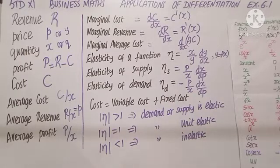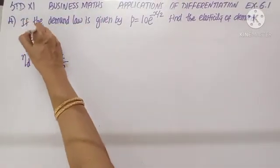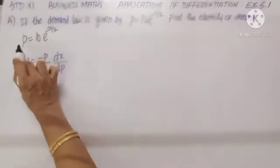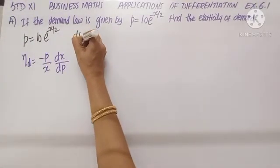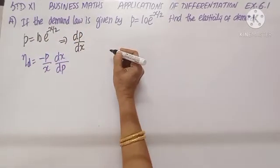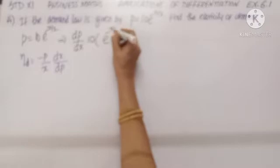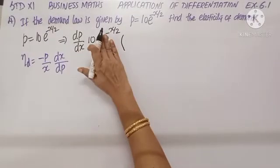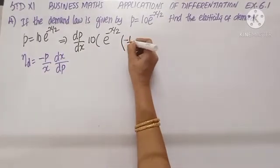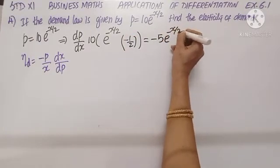Let us proceed into exercise problems. Given the demand function p equals 10e^(−x/2), let us find out dp by dx by differentiating with respect to x. 10 stays as it is, e^(−x/2) differentiates to e^(−x/2) times minus 1 by 2. Simplifying, dp by dx equals minus 5e^(−x/2).